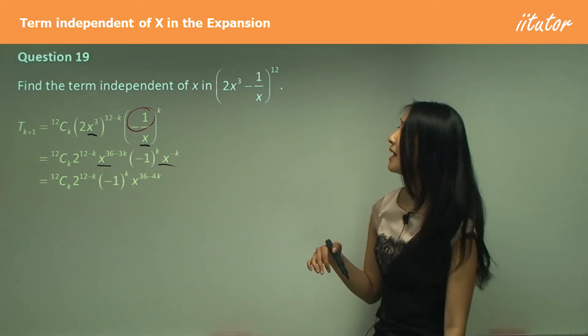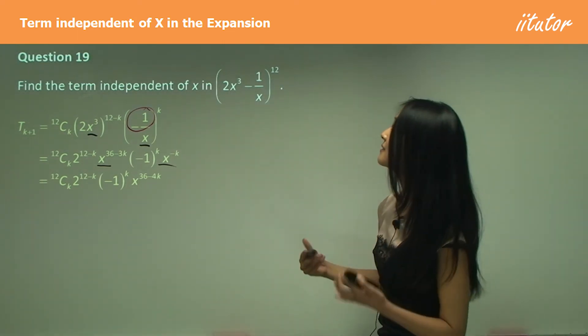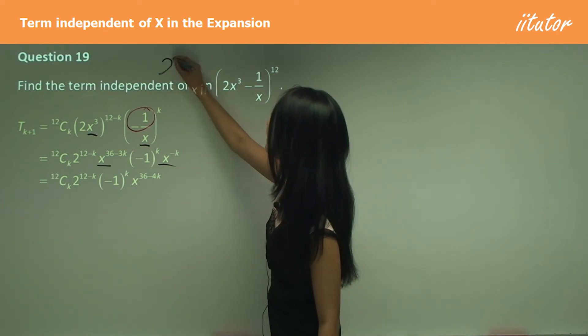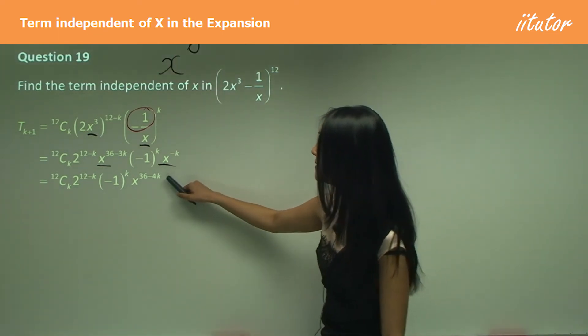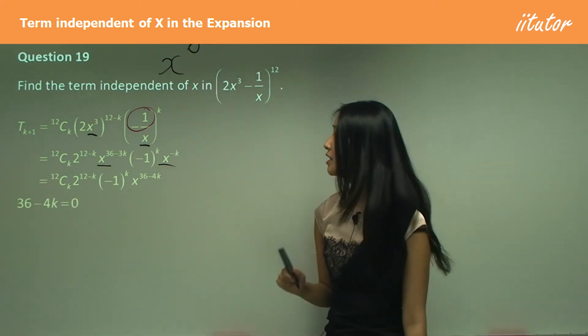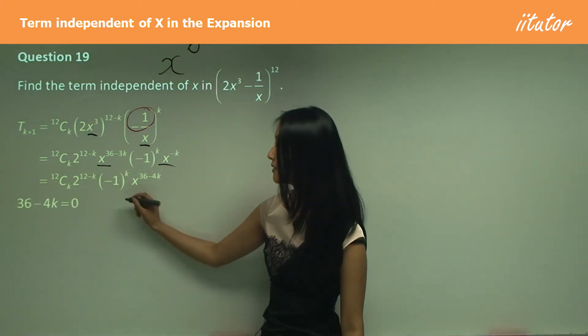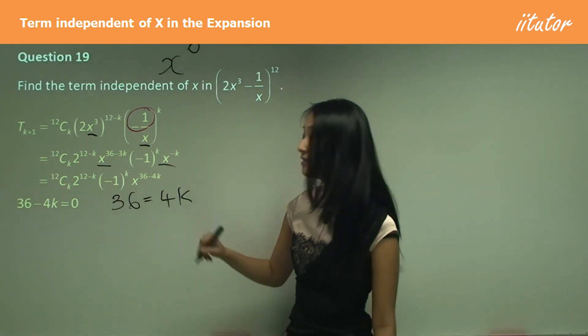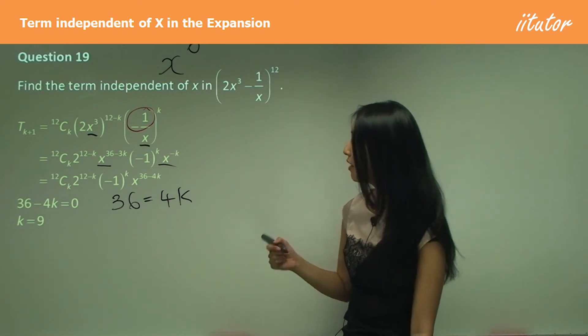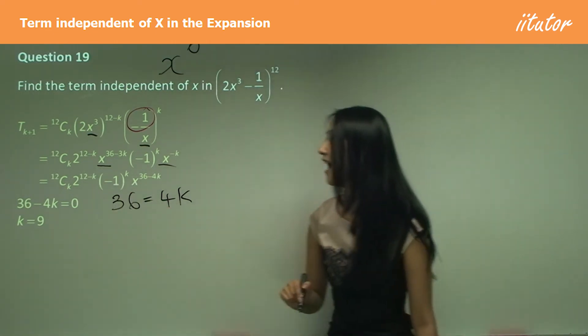When we have a term independent of x, that means we want x to the power of 0. So I need to make that index equal to 0: 36 - 4k equals 0, so 36 equals 4k. Divide both sides by 4, so k equals 9.